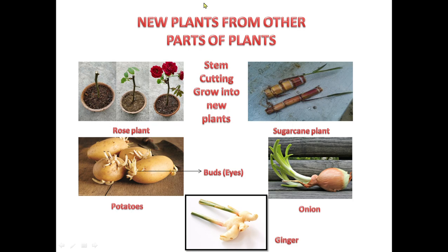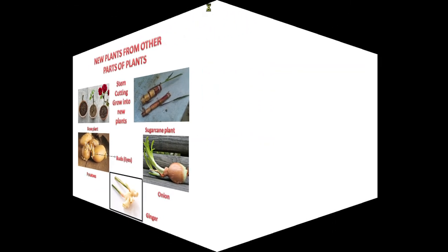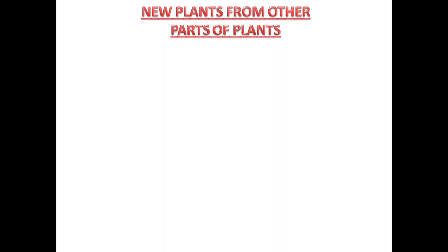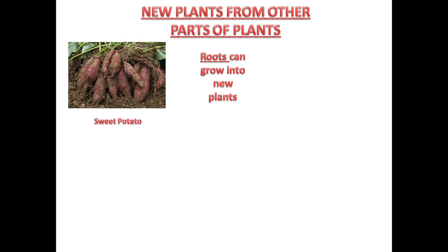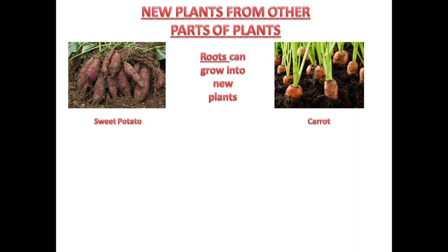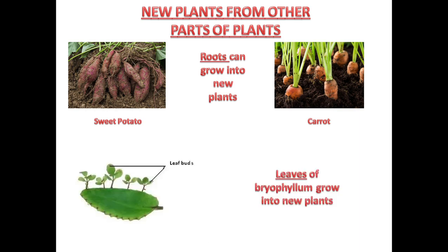New plants can also be grown from other parts of the plant: stem, buds, roots, and leaves. For roots, sweet potato and carrot are examples — these roots can be used to grow new plants. Besides stem, buds, and roots, some leaves like bryophyllum have leaf buds which help in the growth of new plants.